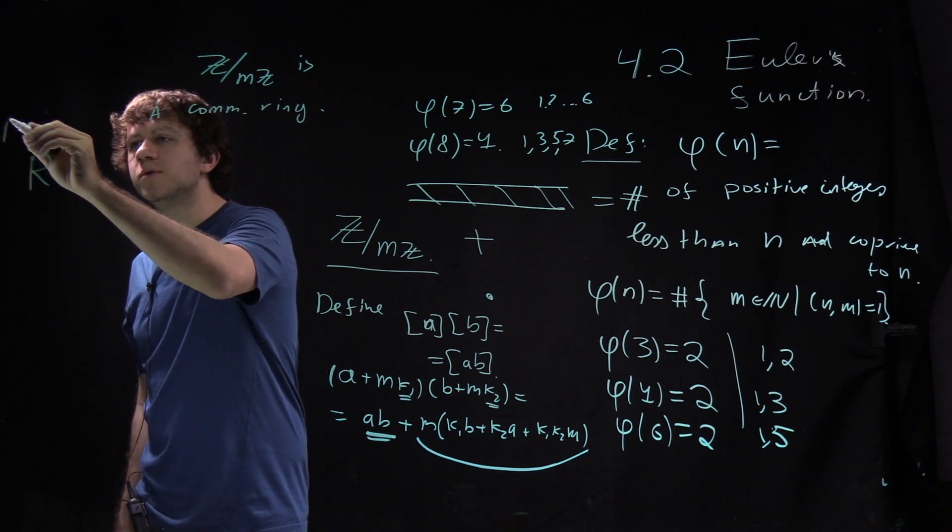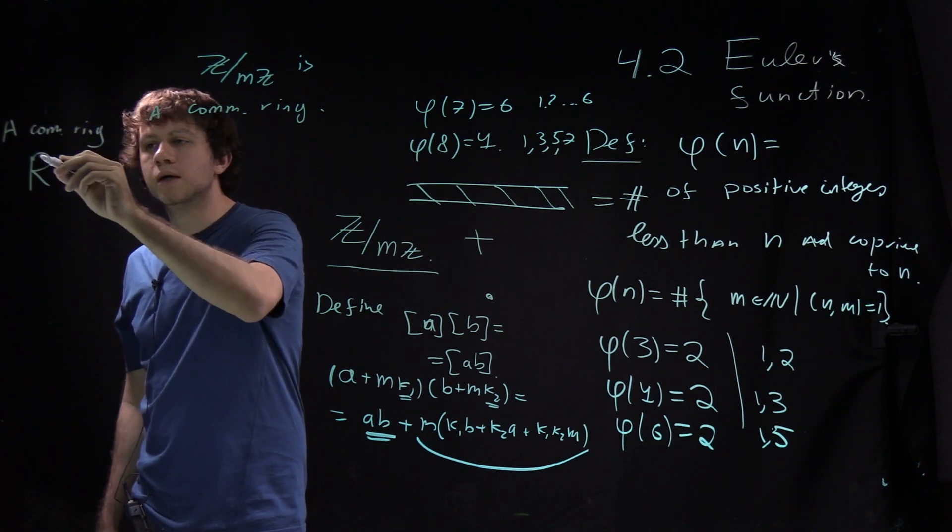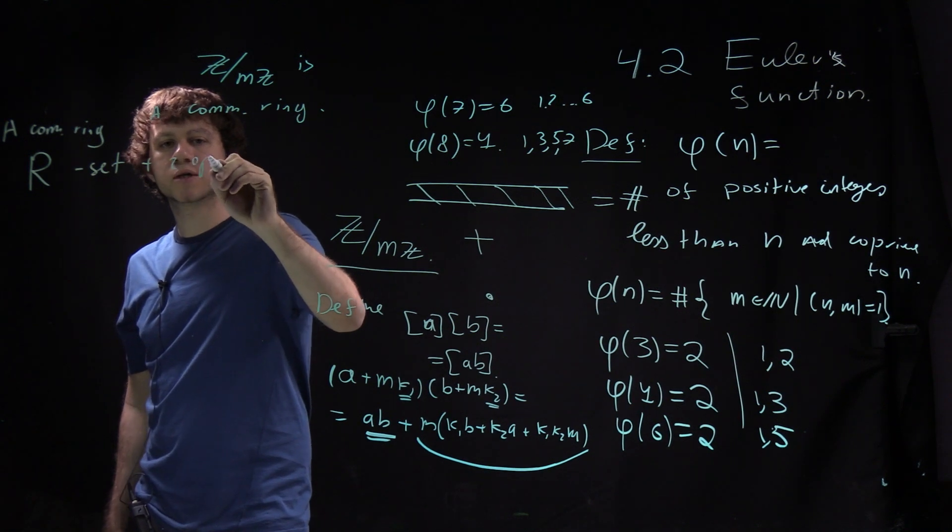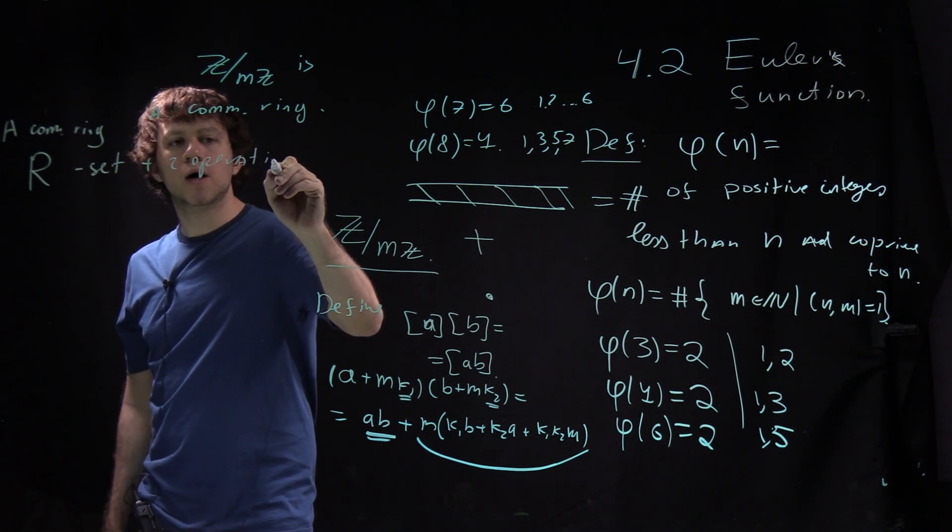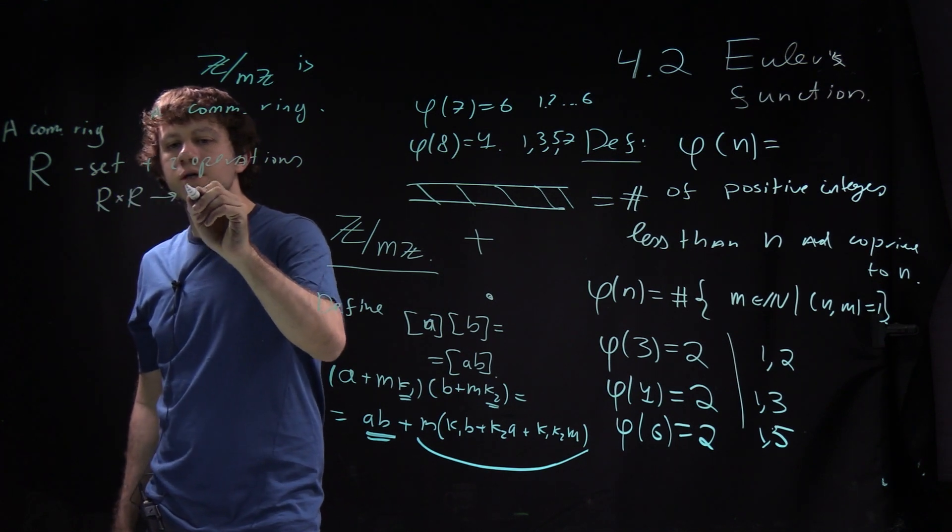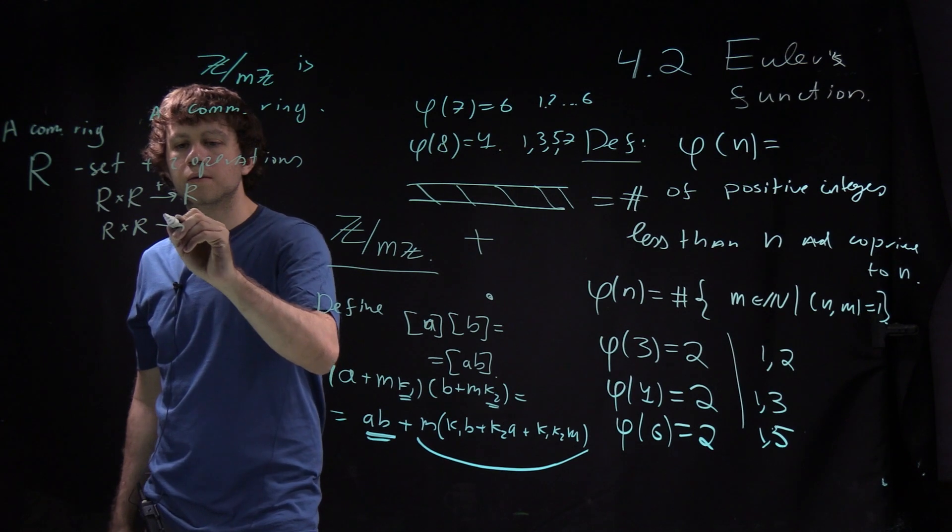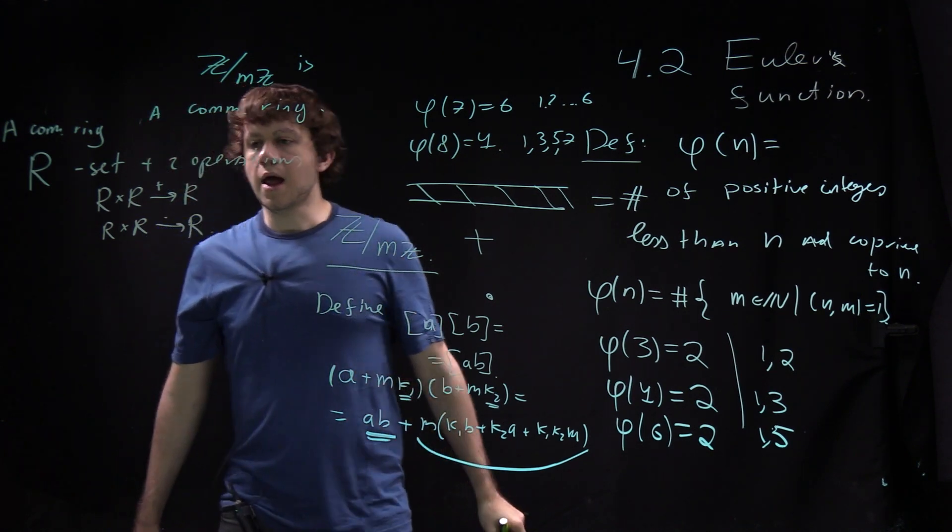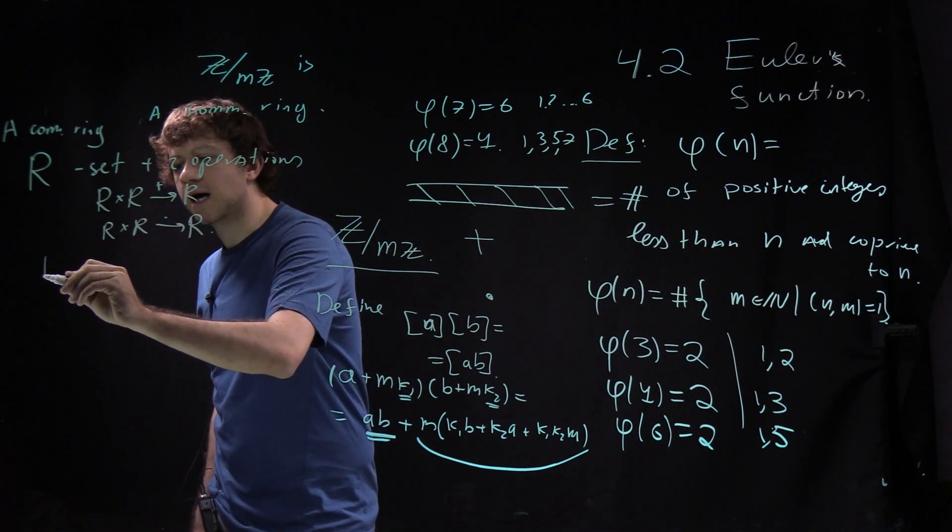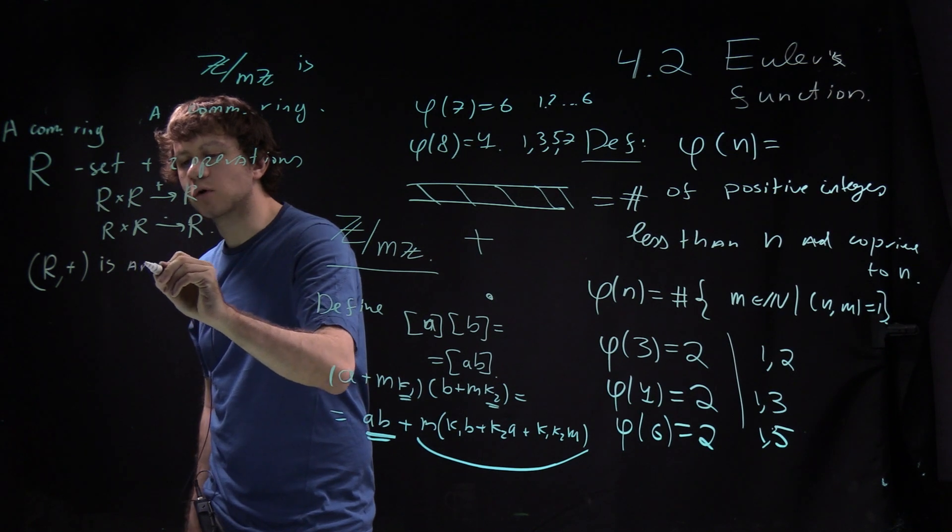A commutative ring R is a set plus two operations, one denoted by addition and another by multiplication, and they satisfy certain properties.